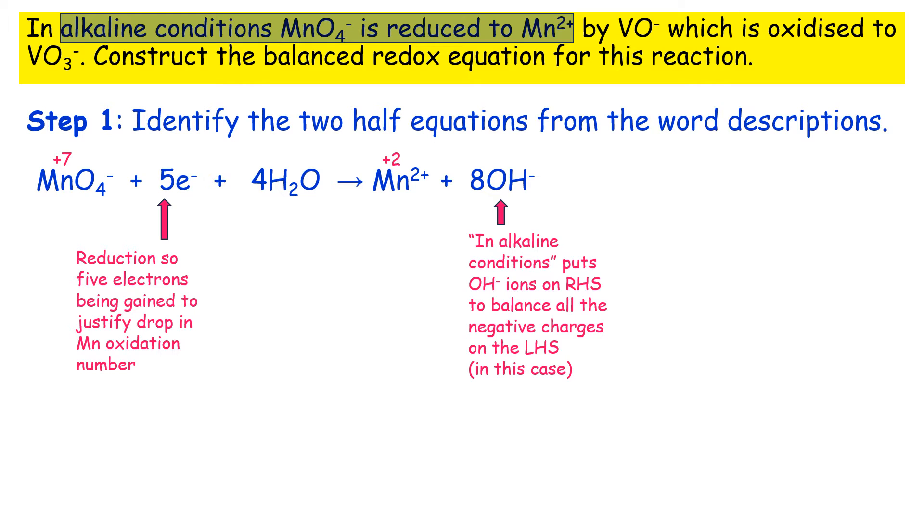So you'd definitely need more than five minus charges on the right hand side. You also need to take account of the fact you have four oxygens in MnO4-. So a bit of multiplying up lands you at 8OH- and therefore you've got four H2O's.